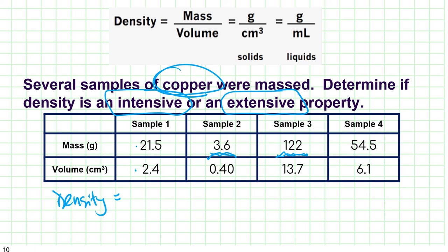What I want you to do is find the density of each of these samples. So mass divided by volume of this guy, mass divided by volume of this guy, mass divided by volume, mass divided by volume. And I want you to compare the four densities that you find and use that as evidence for is density intensive or is it extensive? I'm going to ask you in class.